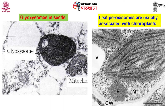Glyoxysomes are specialized peroxisomes observed in germinating seedlings of oil seeds. They mobilize storage lipids in germinating seedlings through the glyoxalate pathway. Leaf peroxisomes are present in green and photosynthetically active tissues and contain enzymes necessary for the light-dependent processes of photorespiration.